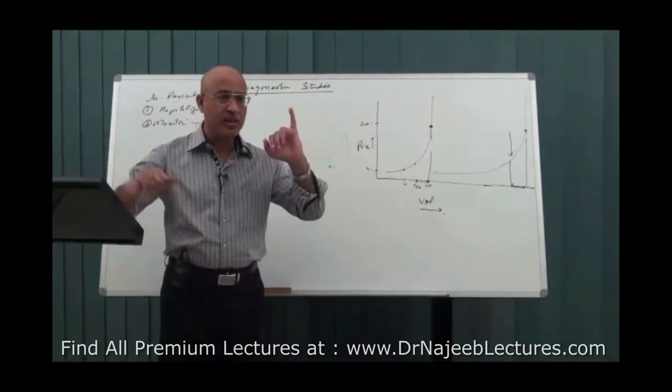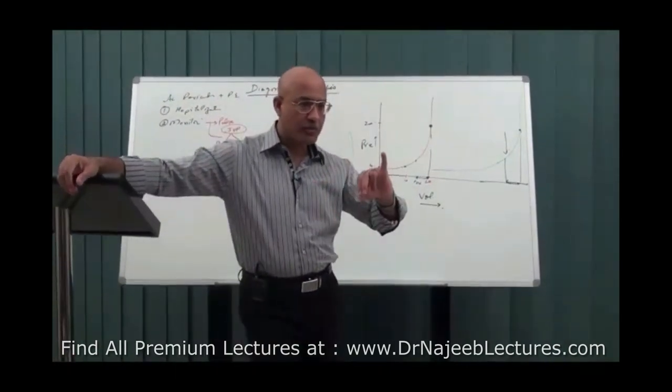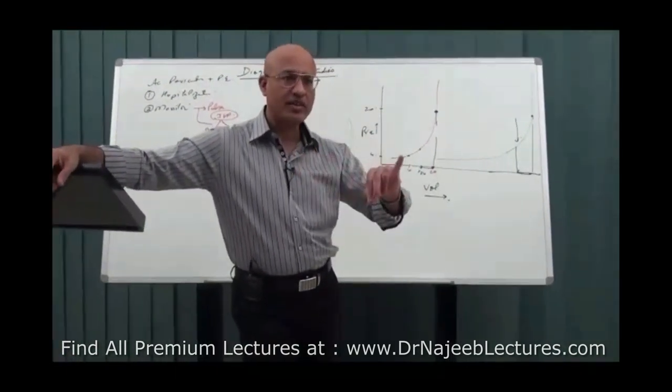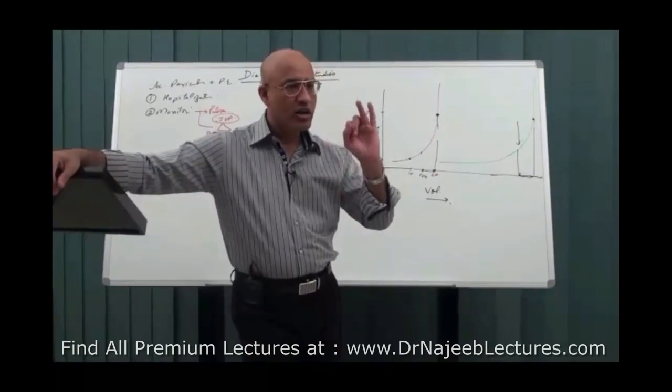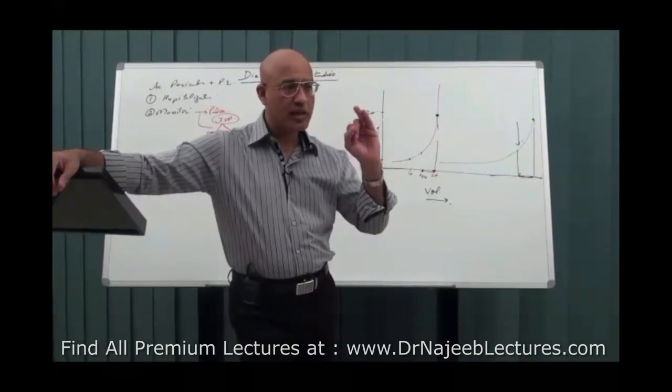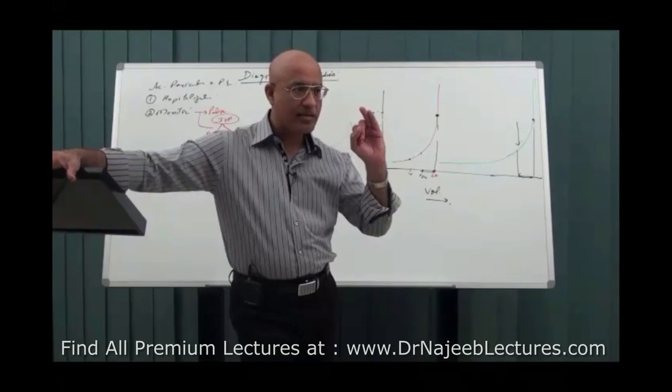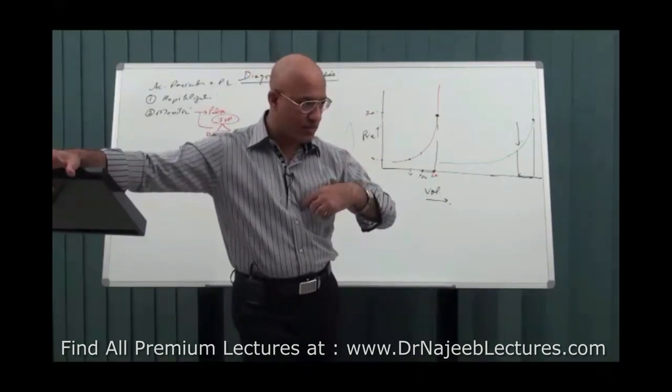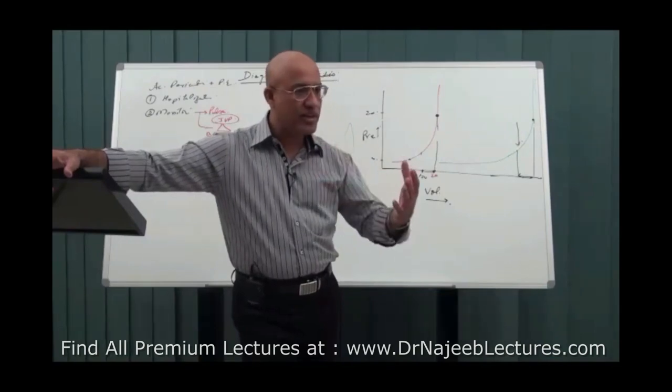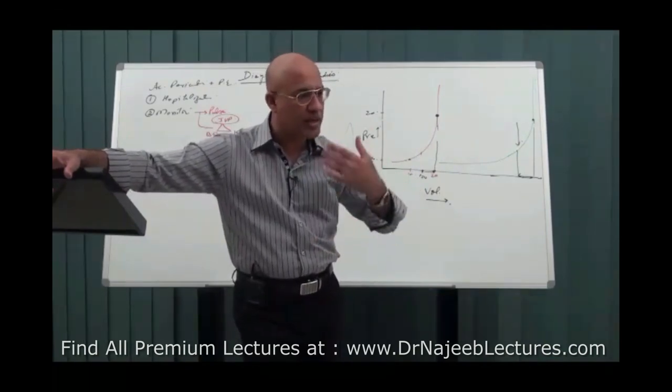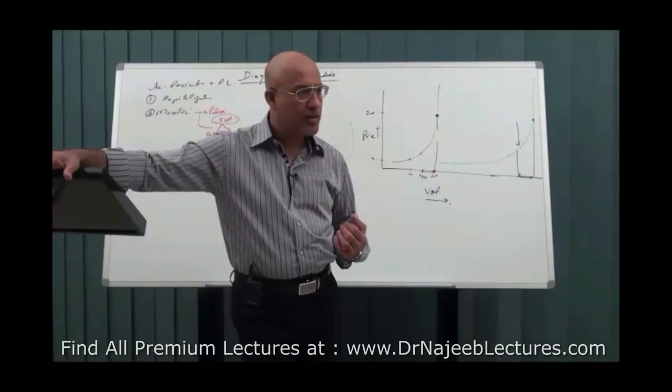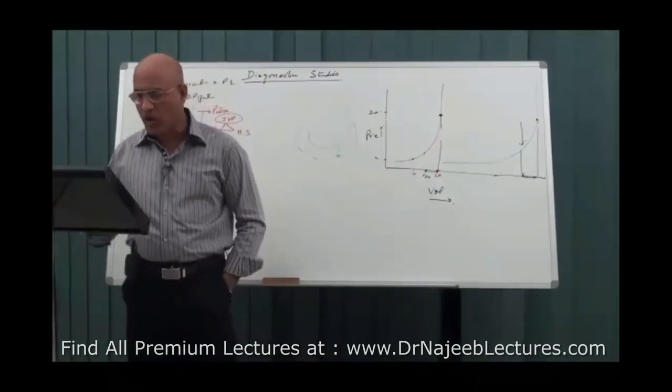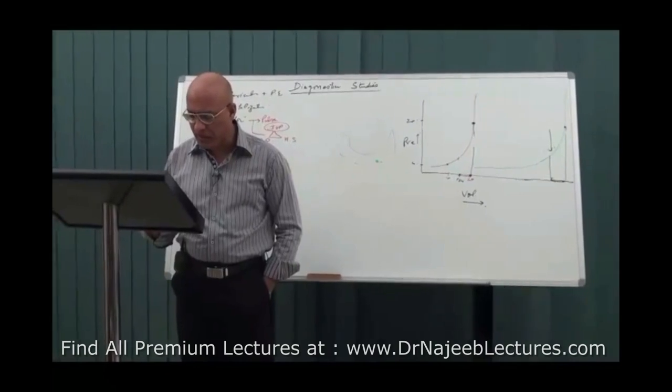What was the first thing? Pericardiocentesis, that is needle aspiration with leaving a catheter for drainage. Or if there is going to be recurrent and you have to take tissue sample or it's loculated, you go for surgical drainage. And if there is very recurrent and long-term effusion coming and coming, then you go for pericardio-pleural fistula, that is pericardial window.